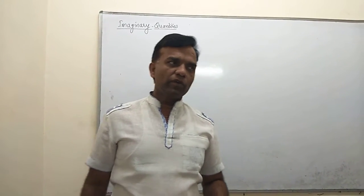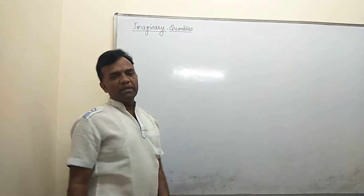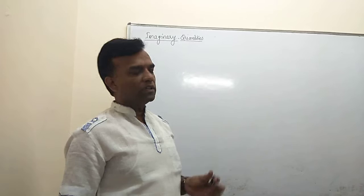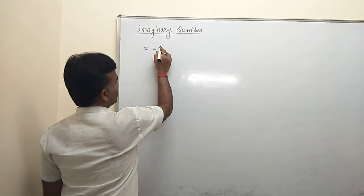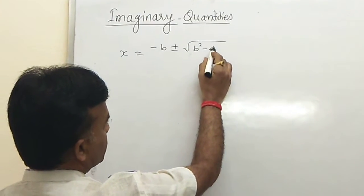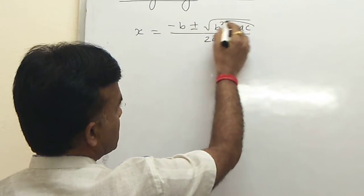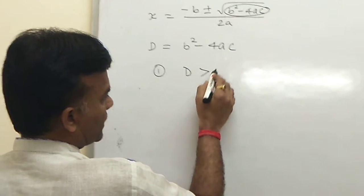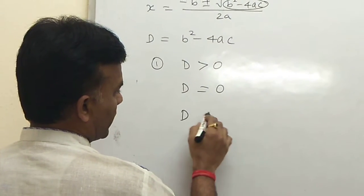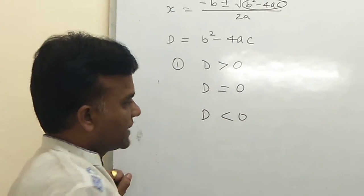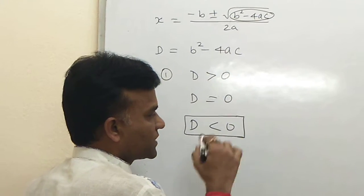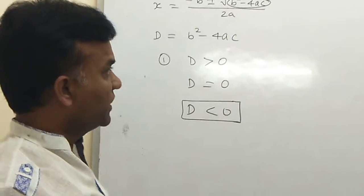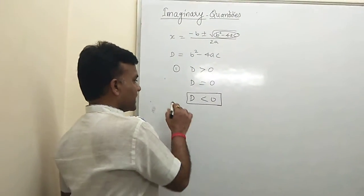Today we again introduce imaginary quantities. In 10th class we studied quadratic equations using the formula x = (−b ± √(b²−4ac)) / 2a. The value inside the square root is called D, equal to b²−4ac. There are three cases: D greater than 0, D equal to 0, and D less than 0. When D is less than 0, you have a negative number inside the square root — that is the case we discuss here with imaginary numbers.